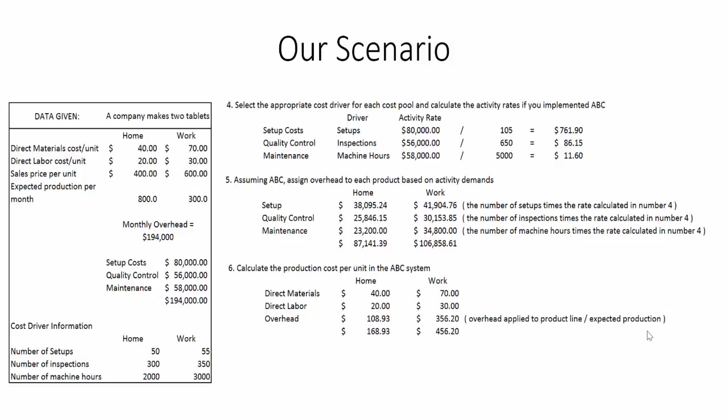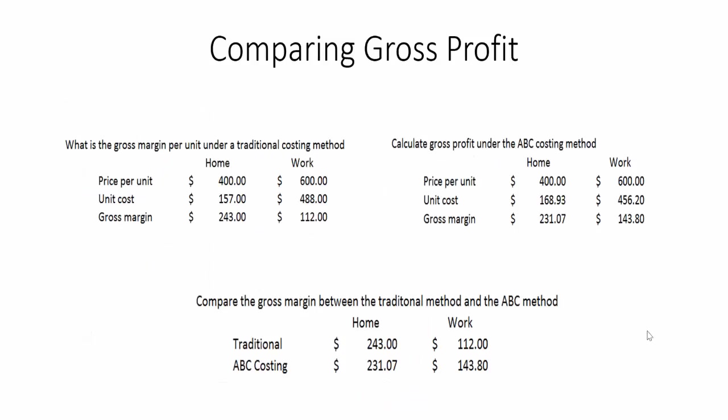The same calculations work for the work tablet. Then we calculate the gross profit under the ABC costing method. The price per unit is still $400 for the home tablet. We subtract $168.93 as the unit cost, and that gives us a gross margin of $231.07. The same calculations apply for the work tablet.